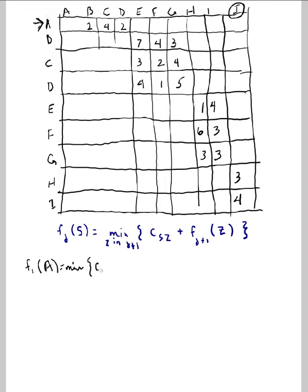That's the cost to go from A. I have three nodes in stage two, right, here's two and here's one. So from A to B plus the cost to go from stage two from B to the destination. See the cost from A to C plus the optimal cost to the destination from C, C to D plus the optimal cost from D to the destination.